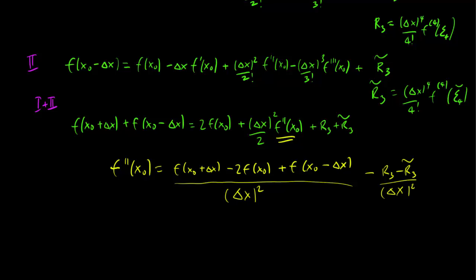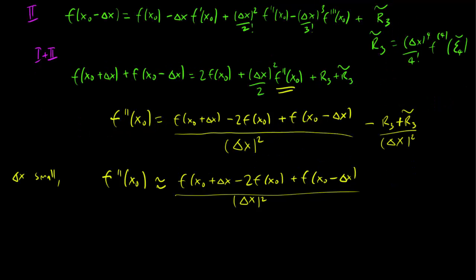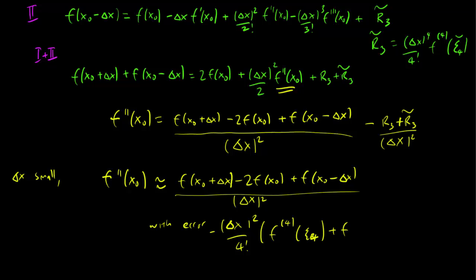With a remainder given by minus r3 plus r3-tilde over delta x squared. In other words, the approximation has an error term, which when simplified becomes delta x squared over 4 factorial times the fourth derivative of f evaluated at zeta4-tilde. So that's your error term.